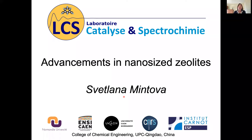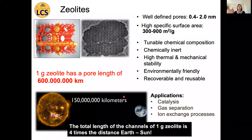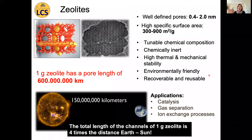Today I will be talking about the advancements made in nanosize zeolites. I would like to start with a short definition for the young fellows in the group. Zeolites are crystalline aluminosilicates with well-defined pores in the range of 0.4 to 2 nanometers. Zeolites have very high specific surface area, but not as high as metal-organic framework type materials, and they have very tunable chemical composition, high thermal and mechanical stability.